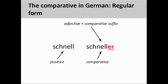As you see on the screen, the comparative form of the adjective 'schnell', meaning 'fast' in German, is 'schneller'. There are also irregular and umlauted forms of German comparatives which we will not examine here. You may want to review these before continuing with this video.